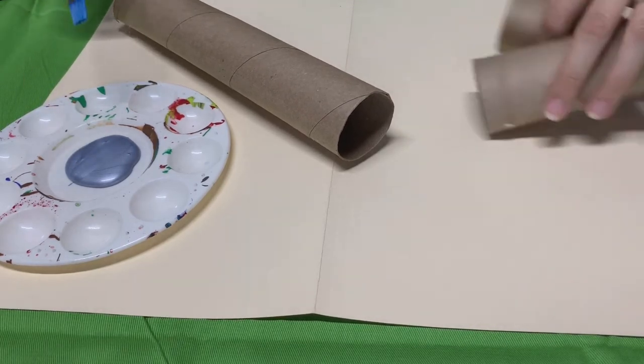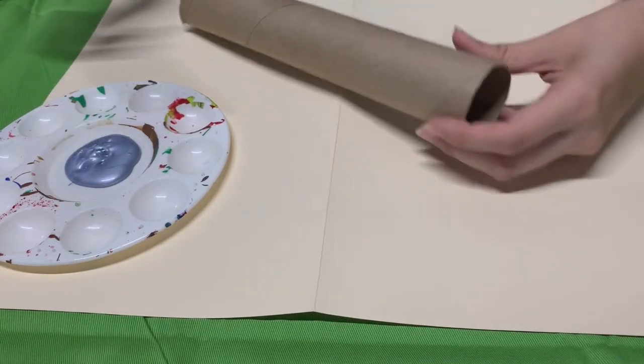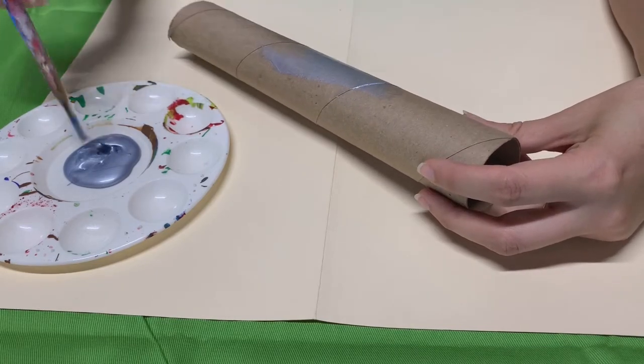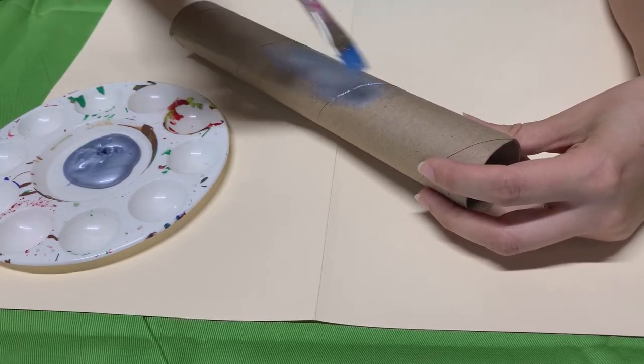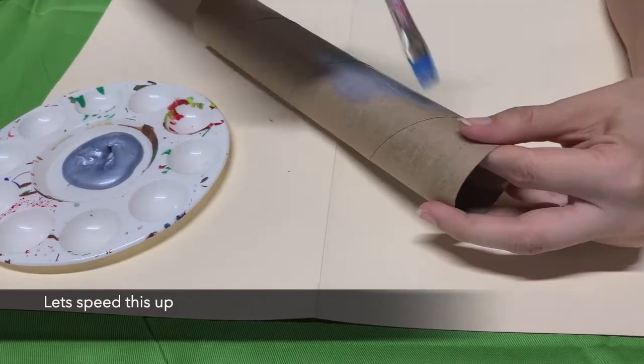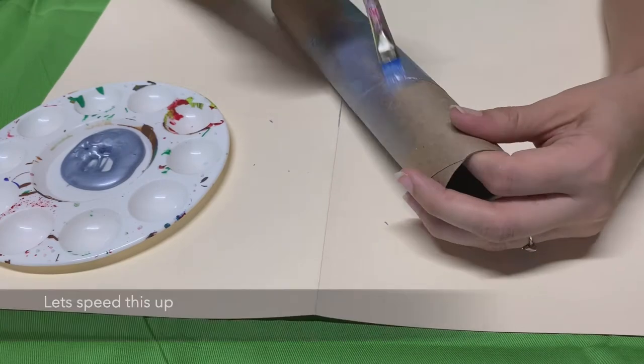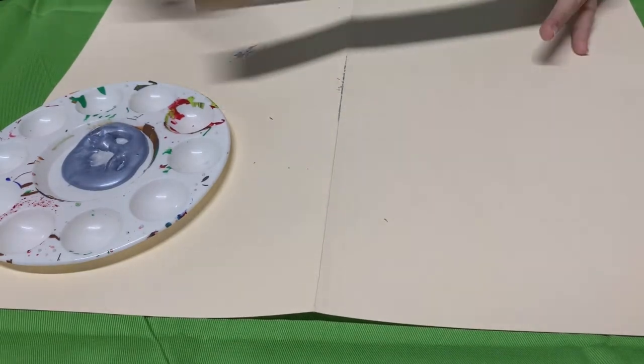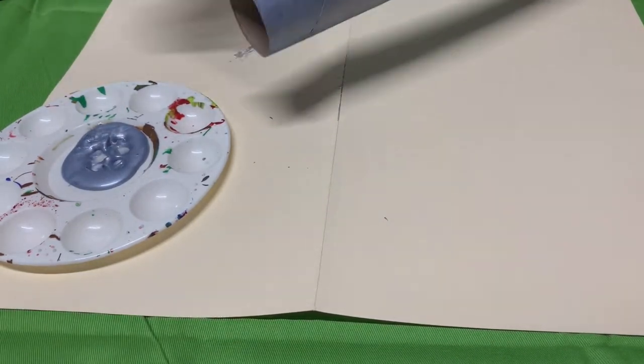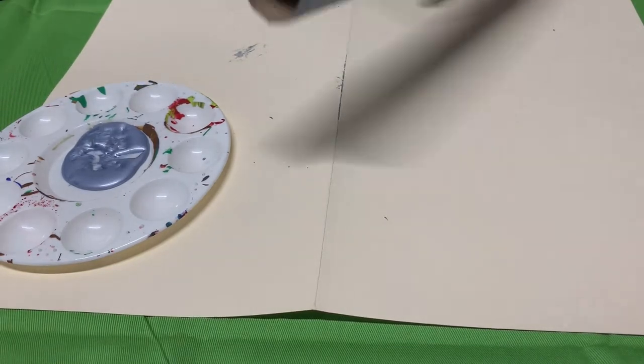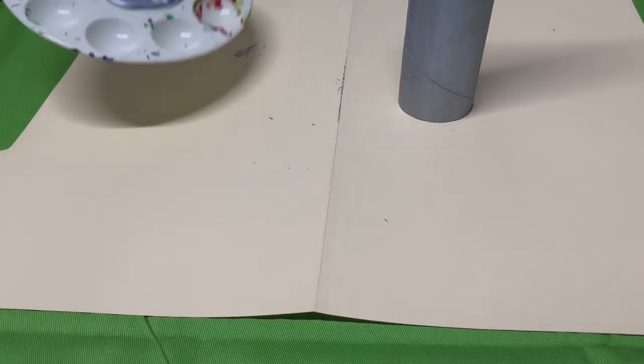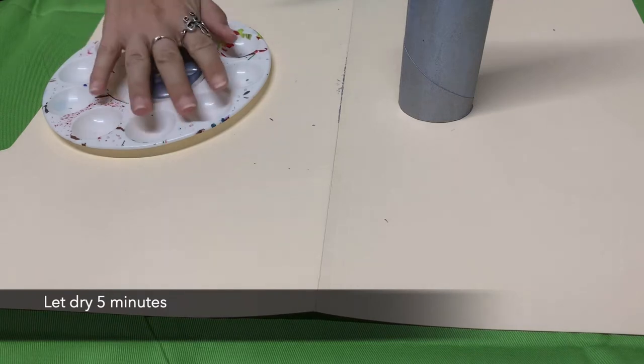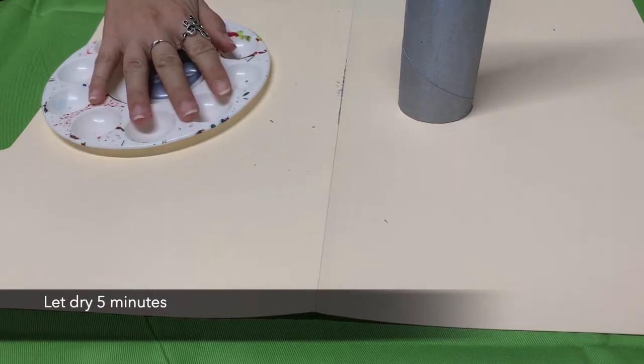All right, so we're going to go ahead and paint our tubes. I'm going to go with my paper towel tube and you don't want your paint to be too thick because then it'll take forever to dry. You can always come back in and do a second coat. All right, so we're going to let that dry and we're going to make sure we wash our brush out really well. We're going to cover our paint because we're going to use it again once this is dry and we'll be back.